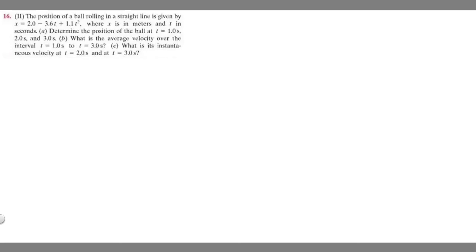In this problem we're told that the position of a ball rolling in a straight line is given by x equals 2 minus 3.6t plus 1.1t squared, where x is in meters and t is in seconds. Part A asks us to determine the position of the ball at t equals 1, 2, and 3 seconds. Part B asks what is the average velocity over the interval from 1 second to 3 seconds. And part C asks what is the instantaneous velocity at t equals 2 seconds and at t equals 3 seconds.